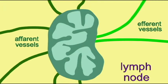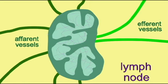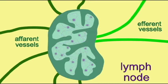Lymph travels through them. Lymph enters a lymph node through afferent lymphatic vessels and then slowly meanders through the sinuses of the lymph node, composed of reticular tissue, and then will depart the lymph node through two efferent vessels. While the lymph travels through the lymph node, the lymph nodes filter lymph.